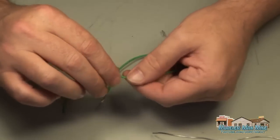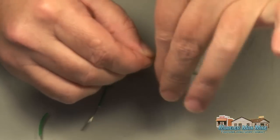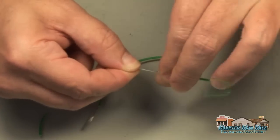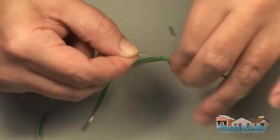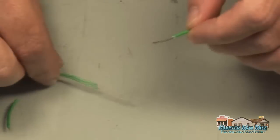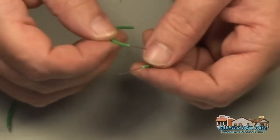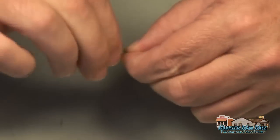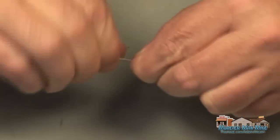So here I'm going to demonstrate how to do a pigtail, connecting two wires together. What I do is I strip the wire back and I twist each of them pretty tight. Then I put them together and then twist these two tightly together. You want to do this as tight as you can.